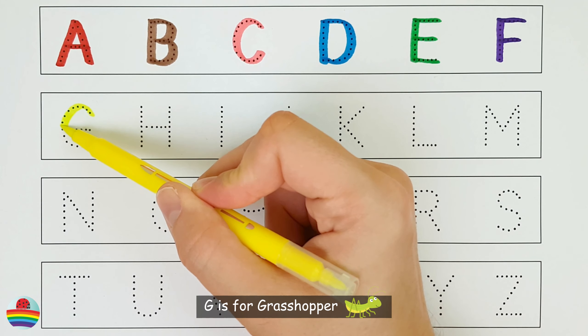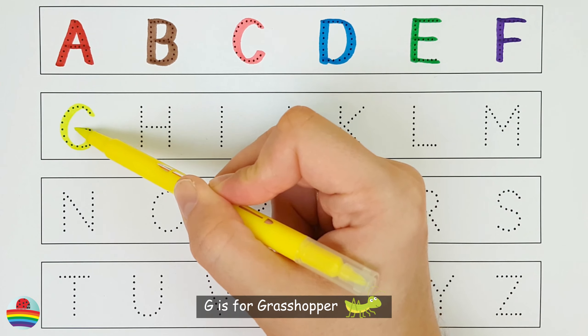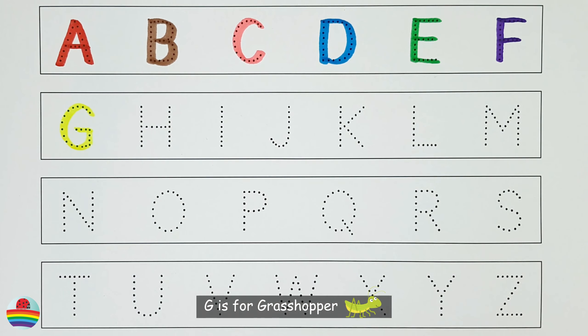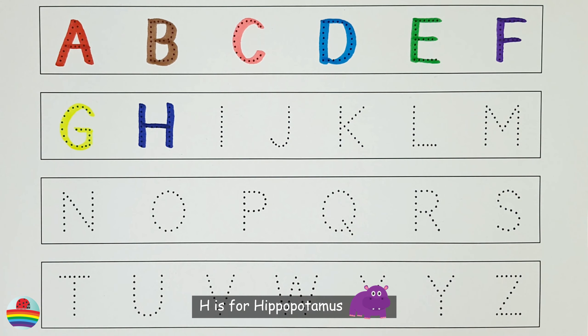G. G is for Grasshopper. G. H. H is for Hippopotamus. H.